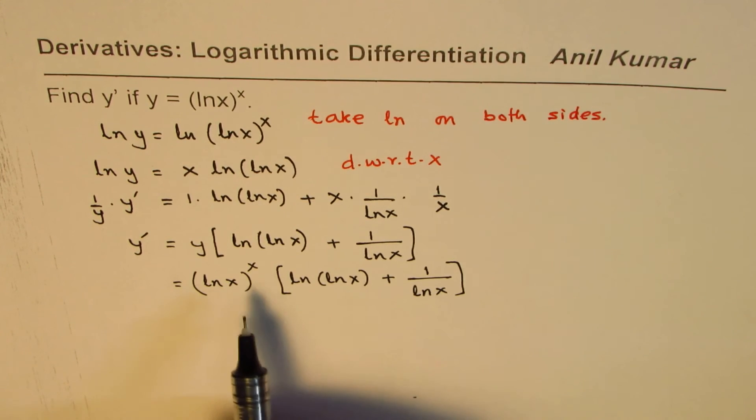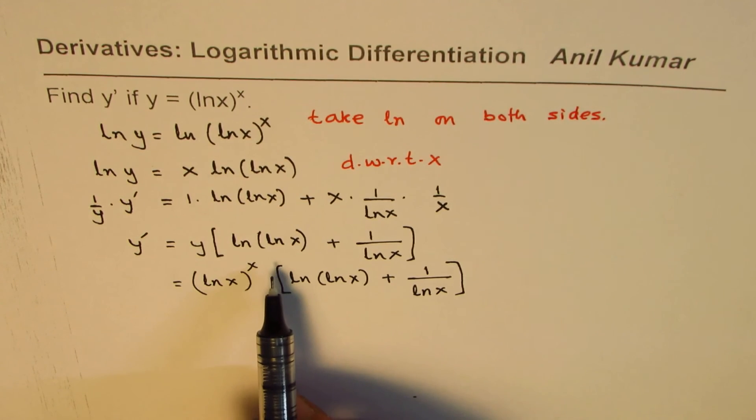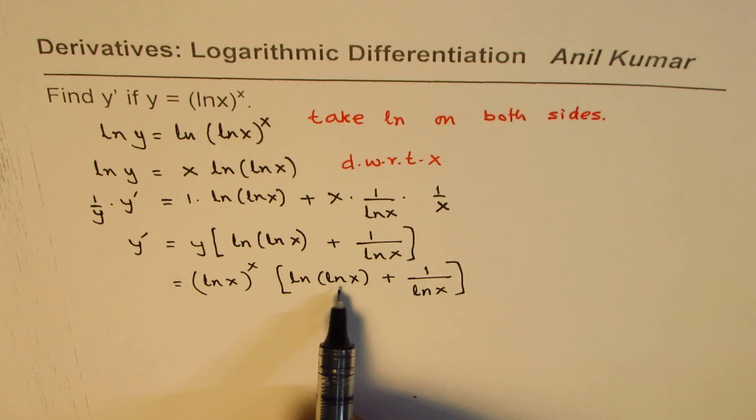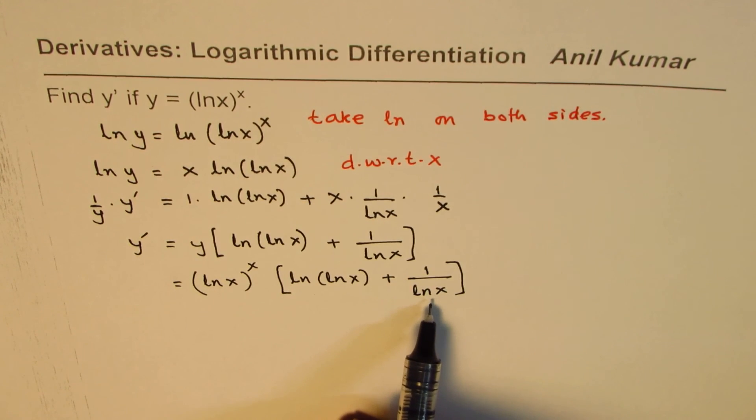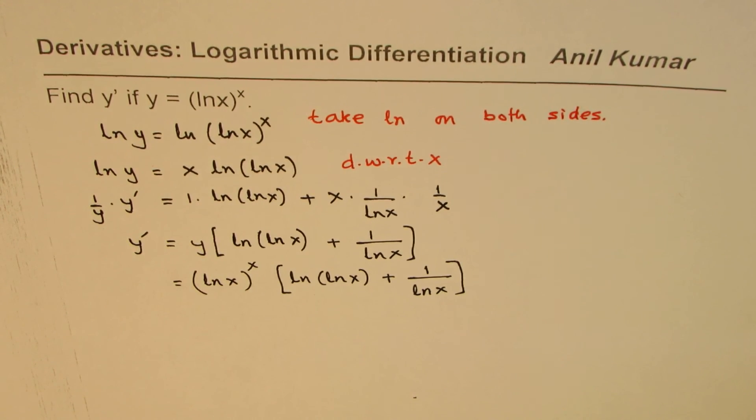I hope that helps. So this is ln x to the power of x equals to ln ln x plus 1 over ln x. I hope the steps are clear. Thank you and all the best.